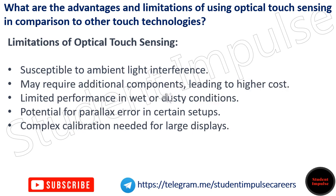Limitations of optical touch sensing include: susceptibility to ambient light interference, potential requirement for additional components leading to higher cost, limited performance in wet or dusty conditions, potential for parallax error in certain setups, and complex calibration needed for large displays.